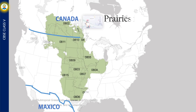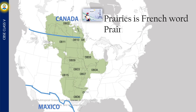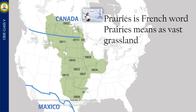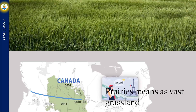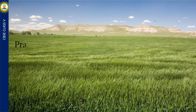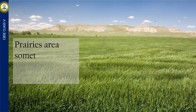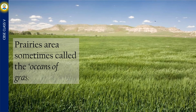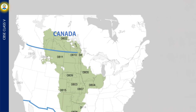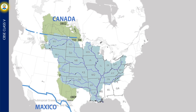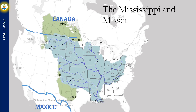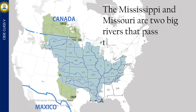Prairies is a French word meaning a vast grassland. They extend from Canada to Mexico. Prairies are sometimes called the oceans of grasses. The Mississippi and Missouri are two big rivers that pass through this region.